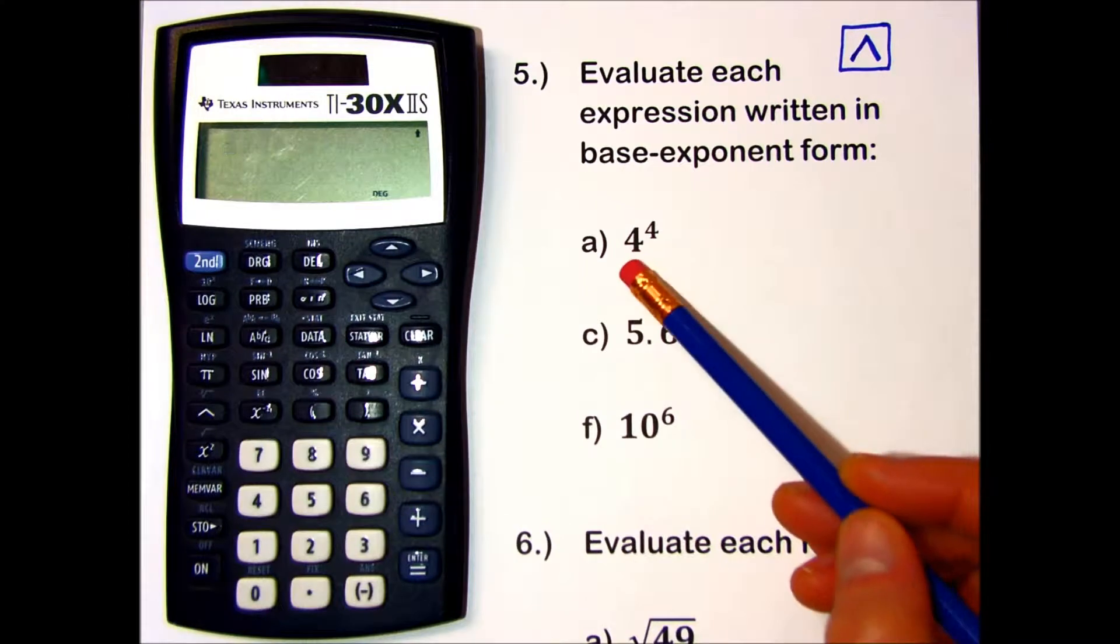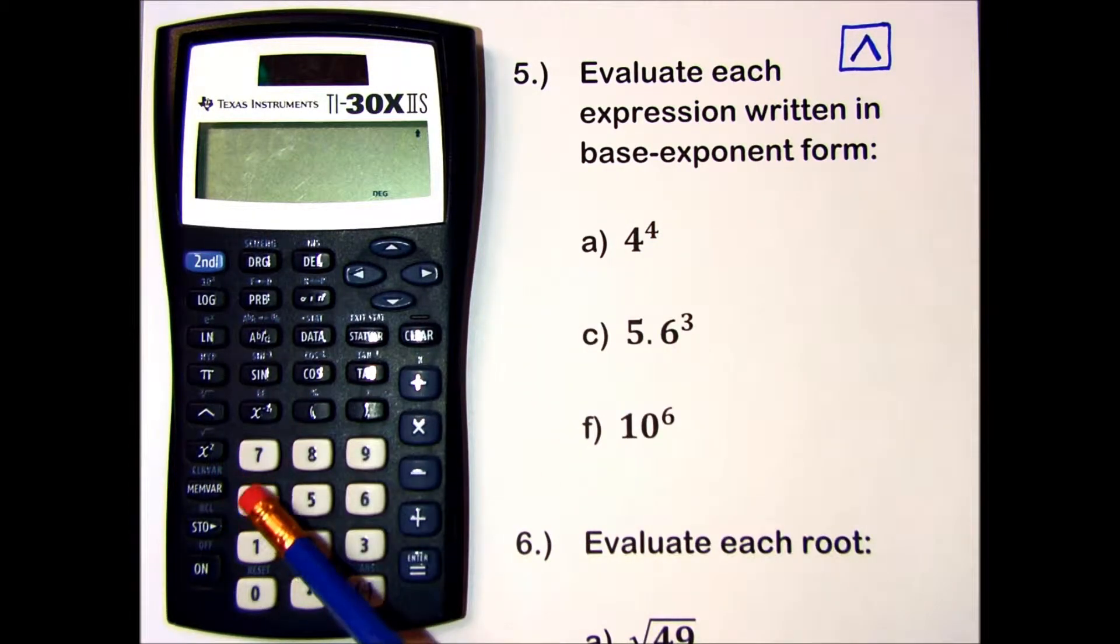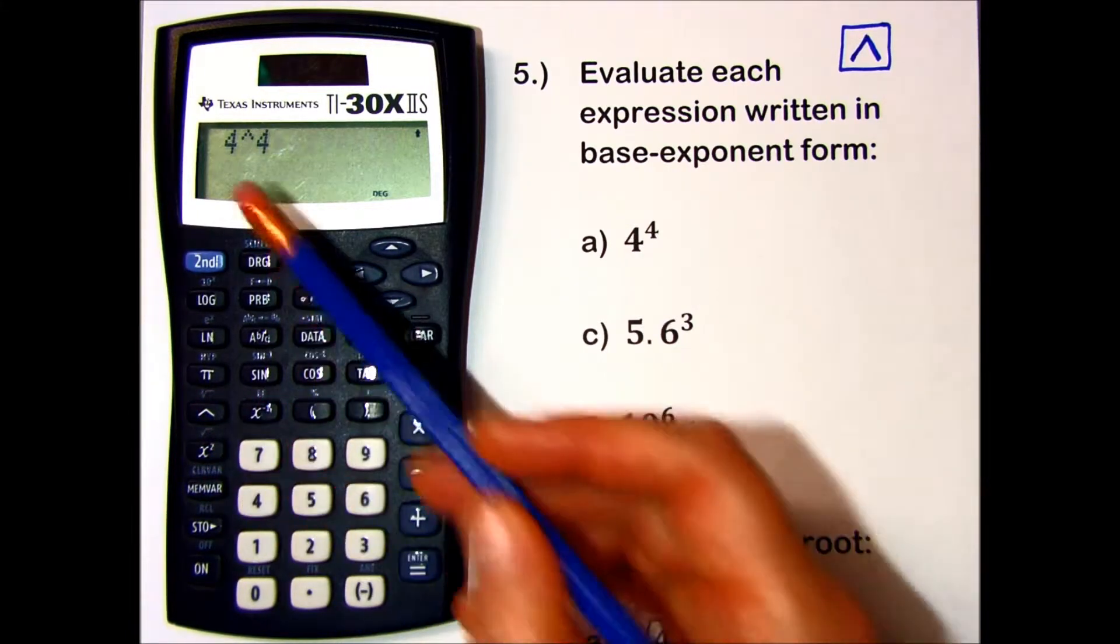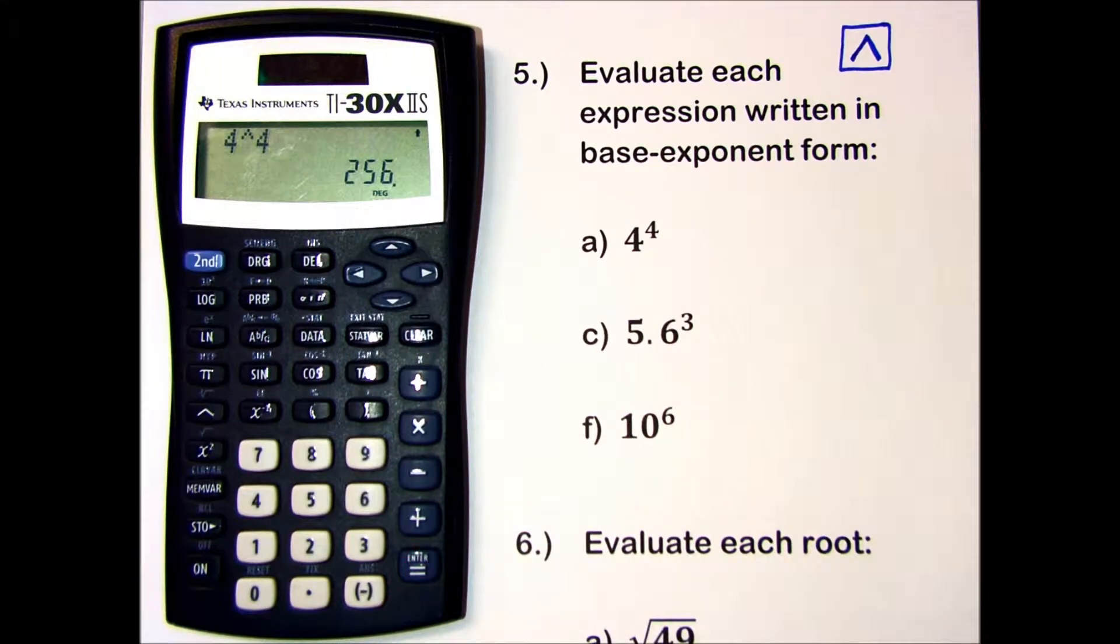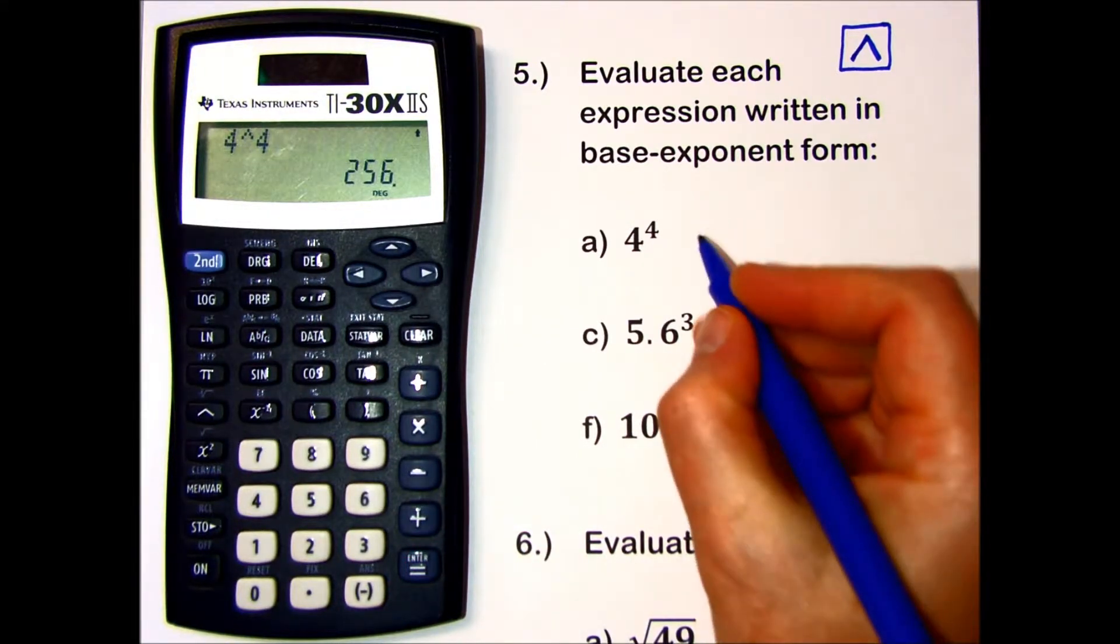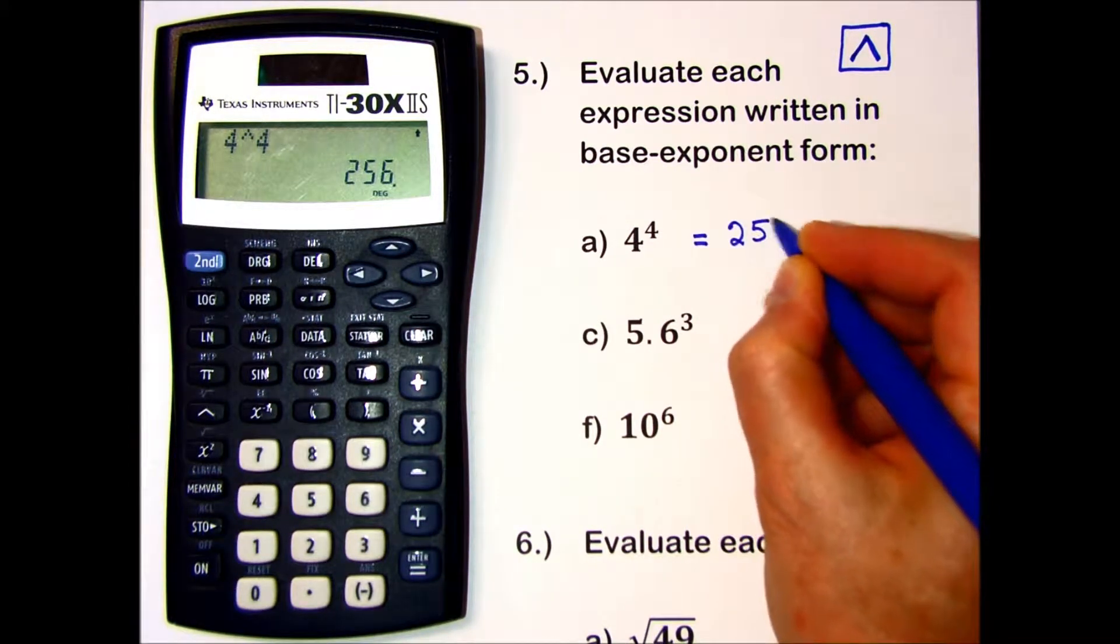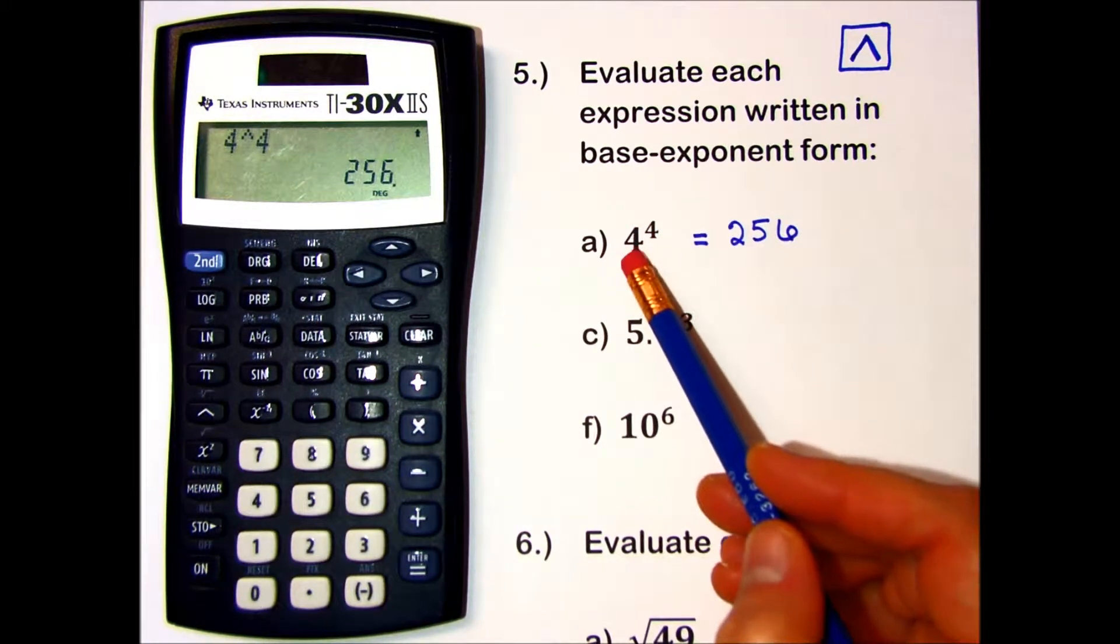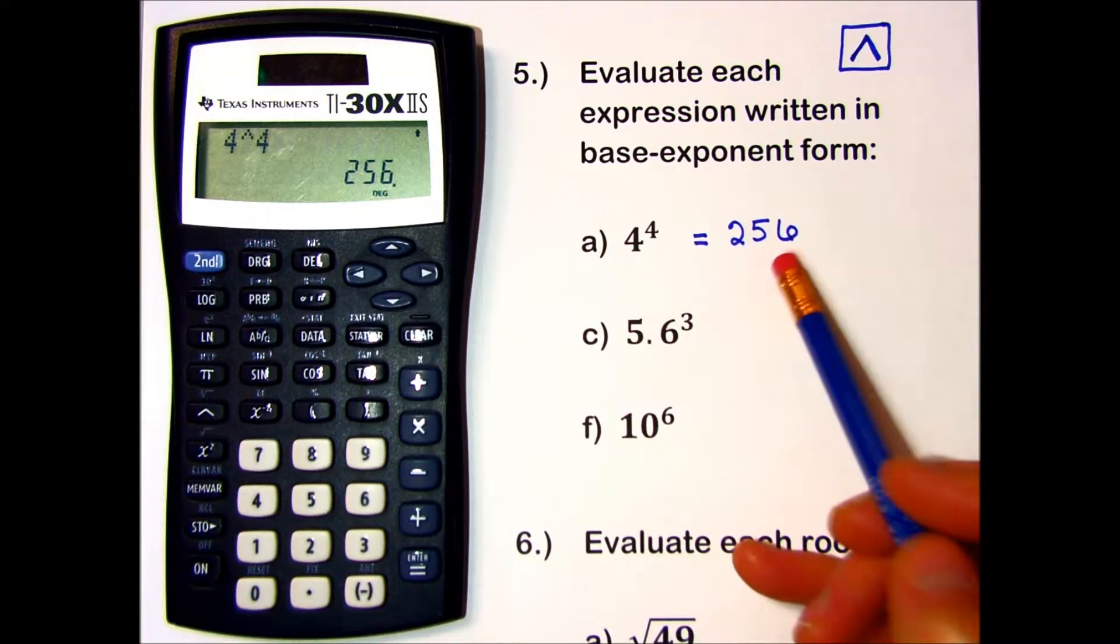For part A, I have 4 to the 4th power. I enter 4 to the 4th, and this is what it looks like on my screen. When I press Enter or Equals, my answer appears, which is 256. To understand that exponent, this means 4 times 4 times 4 times 4, which equals 256.